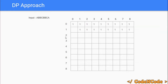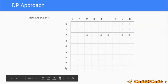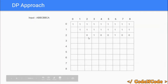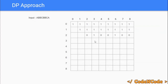Now let's fill all the length-2 substrings, starting from DP[2][2]. The substring of length 2 ending at position 2 is AB, which is not a palindrome, so we fill 0. DP[2][3] equals 1 because the substring of length 2 ending at position 3 is BB, which is a palindrome. Similarly, DP[2][6] is filled with 1 because that substring is also BB, which is a palindrome. The rest of the length-2 entries are filled with 0.